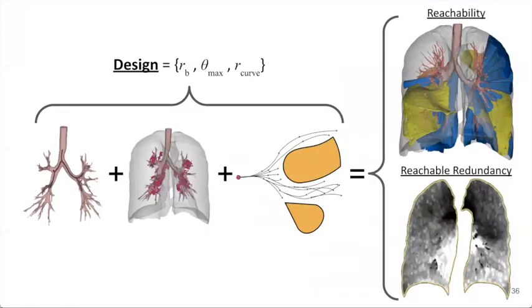Now that we have these three design components and a way to model them, we can efficiently and reliably evaluate any given system design under the two criteria of reachability and reachable redundancy that we previously defined.